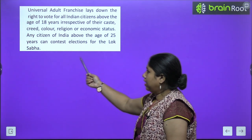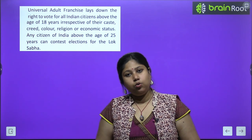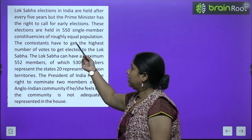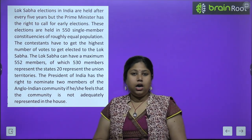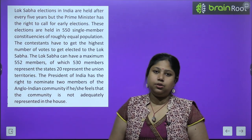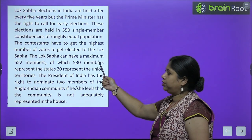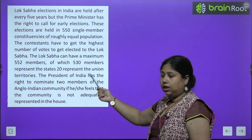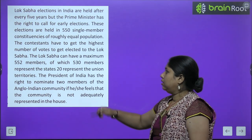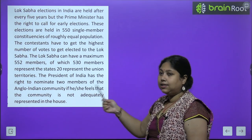Any citizen of India above the age of 25 years can contest elections for the Lok Sabha. Lok Sabha elections are held every 5 years, but the Prime Minister has the right to call for early elections. These elections are held across 550 single-member constituencies of roughly equal population, and contestants must get the highest number of votes to win. The Lok Sabha can have a maximum of 552 members — 530 representing states and 20 representing union territories.